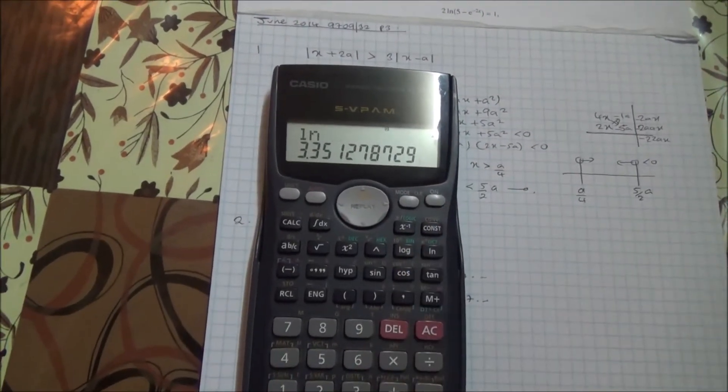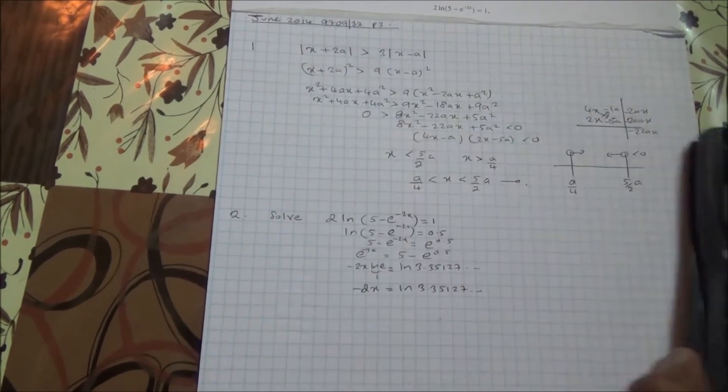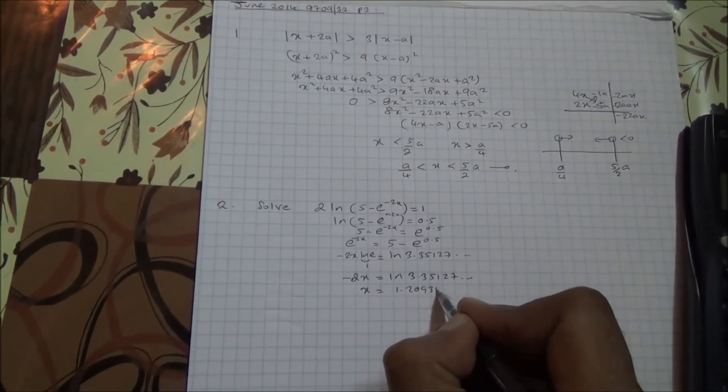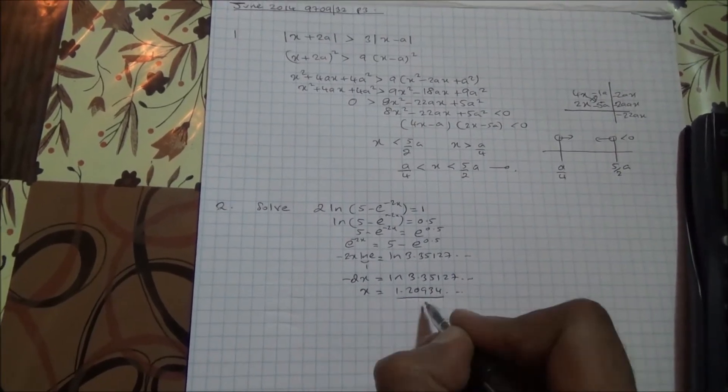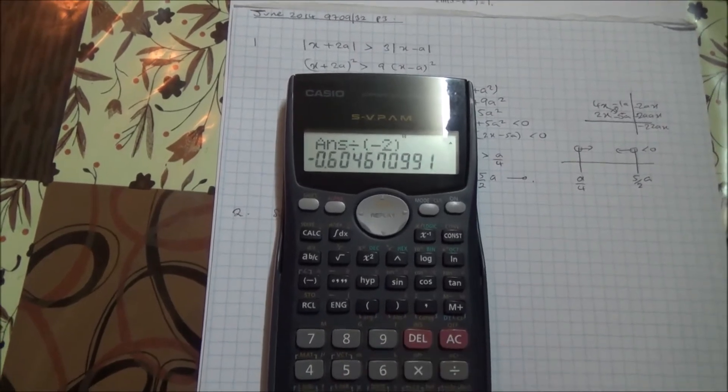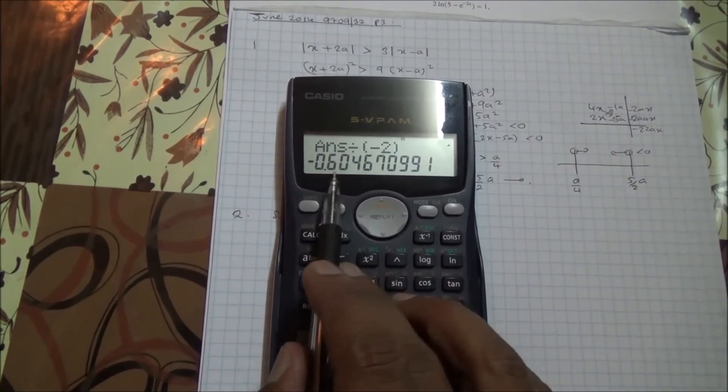So let's do the natural logarithm of this one. It's going to give us 1.20934, so x is going to be 1.20934 and so on, divided by minus 2. So we're going to divide all of that by minus 2, end up with minus 0.6045.